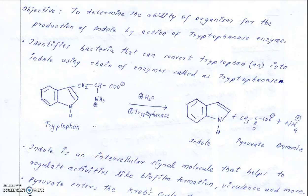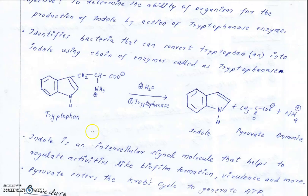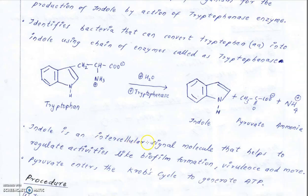The main question is: tryptophan is a protein-building molecule, so why are bacteria breaking it down to produce indole? The answer is that indole is an intracellular signal molecule that helps regulate activities like biofilm formation, virulence, and other factors. So bacteria hydrolyze tryptophan even though it is an important macromolecule.